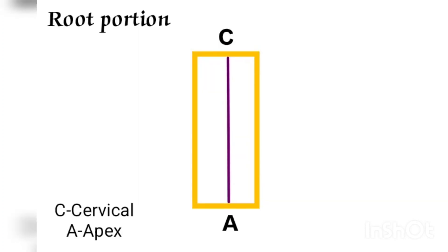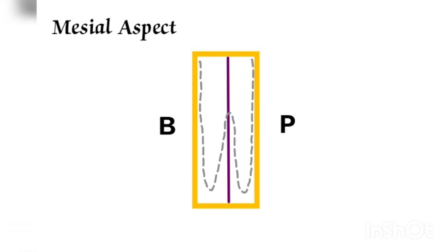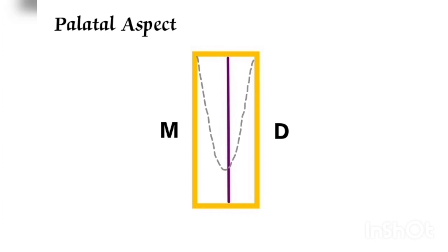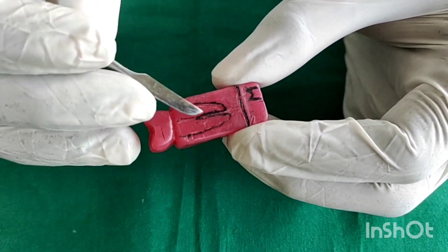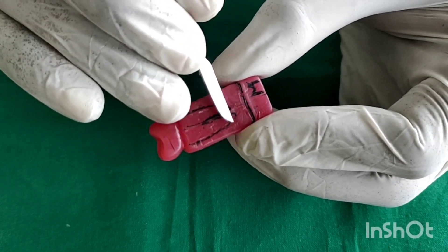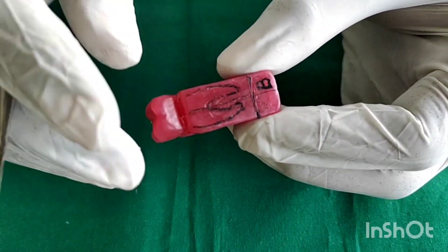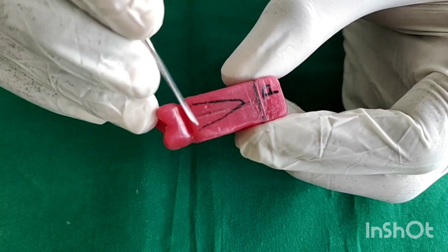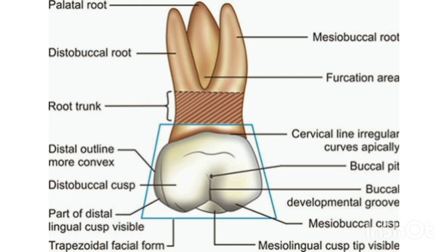Divide the wax block into two equal halves from the cervical to the apex. The buccal aspect has two roots and the palatal aspect has one root. Draw a single root on the palatal aspect and two roots on the mesial, distal and buccal aspects. The two buccal roots measure about 12 mm and one palatal root measures about 13 mm. The root trunk extends apically from the cemento-enamel junction and ends at the roof of the furcation where the root separates.